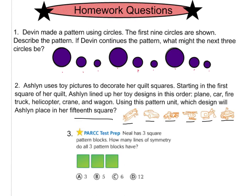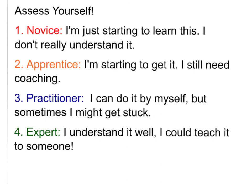When you're done answering these homework questions, please make sure that you rate yourself in the corner of your homework packet. Mark yourself down as one, novice, if you're not really understanding it. Number two, apprentice, you're starting to get it but you need coaching. Number three, practitioner, you can do this by yourself but you might get stuck on occasion. Or four, expert, you understand it very well and you could teach it to someone.